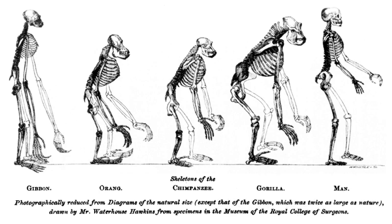SOAP and REST-based interfaces have been developed for a wide variety of bioinformatics applications allowing an application running on one computer in one part of the world to use algorithms, data and computing resources on servers in other parts of the world. The main advantages derive from the fact that end-users do not have to deal with software and database maintenance overheads. Basic bioinformatics services are classified by the EBI into three categories: SSS sequence search services, MSA multiple sequence alignment, and BSA biological sequence analysis. The availability of these service-oriented bioinformatics resources demonstrates the applicability of web-based bioinformatics solutions, ranging from a collection of standalone tools with a common data format to integrative, distributed and extensible bioinformatics workflow management systems.